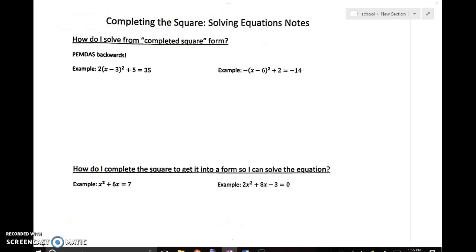The first two examples are just solving in vertex form, so I'll do one of them really quickly. We're going to subtract 5 from both sides to start getting everything away from the quadratic binomial. That's going to leave me with 2 times (x - 3) squared equals 30.